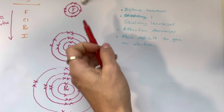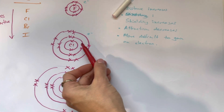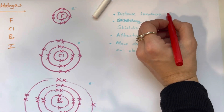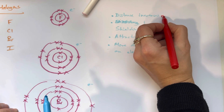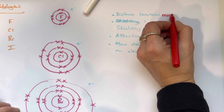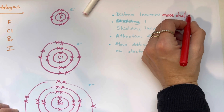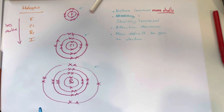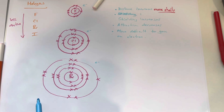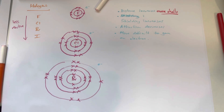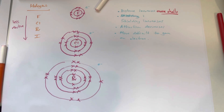Just to make sure I understand — distance increases means there are more shells, yes? Basically — more shells. Perfect, anything else? No, I think that's it. Great.